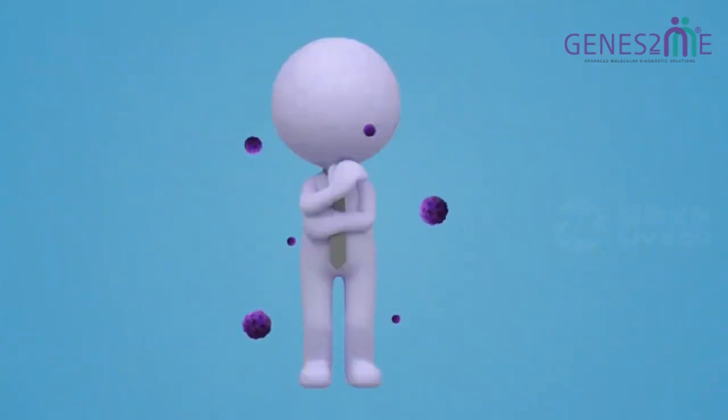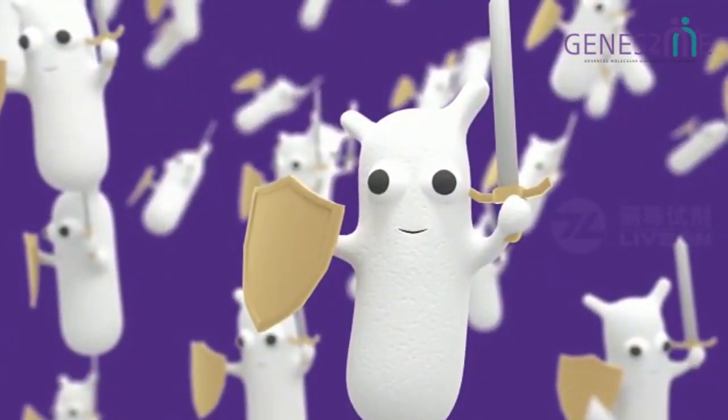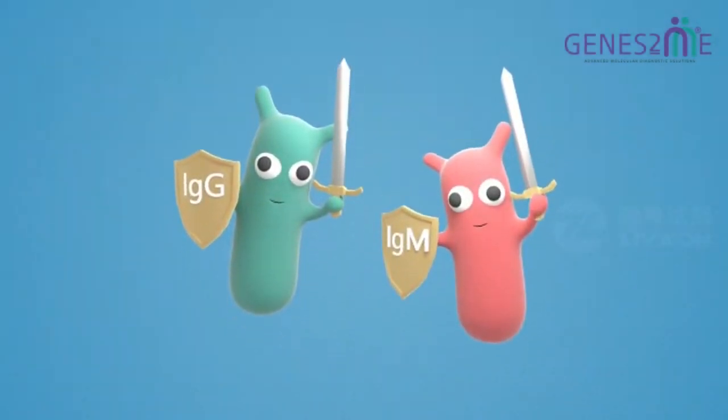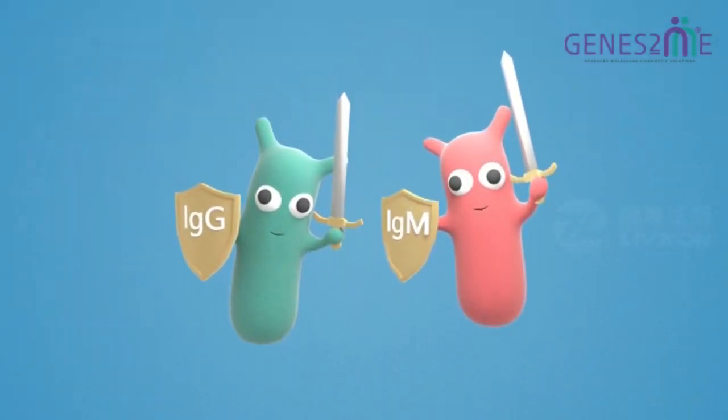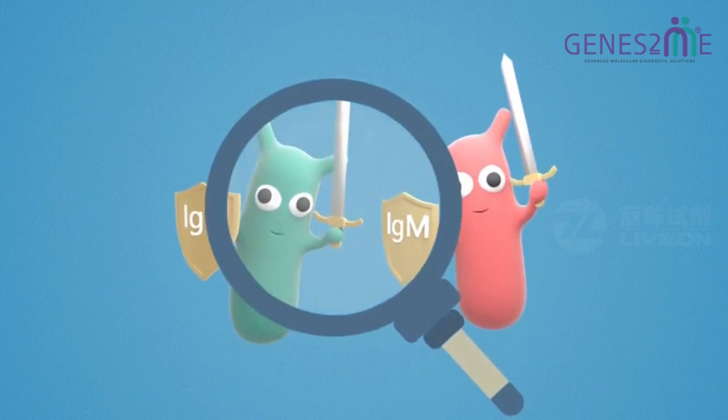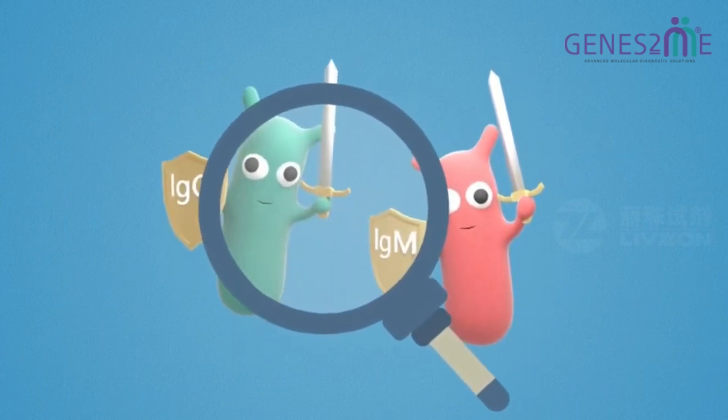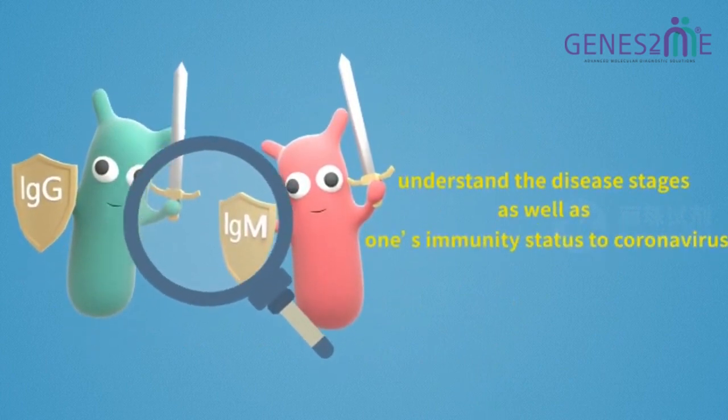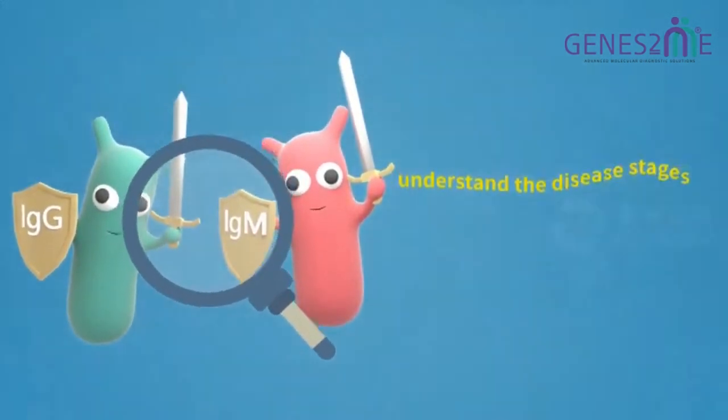When one is infected with coronavirus, his immune system will be mobilized to produce antibodies that attack the virus. IgM and IgG are most commonly used antibodies to diagnose the virus infection. Detection of these two classes of antibodies can not only help to diagnose COVID-19, but also understand the disease stages as well as one's immunity status to coronavirus.